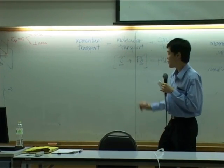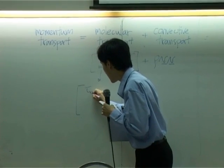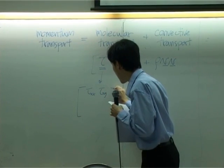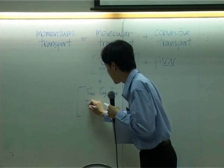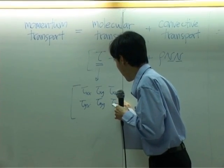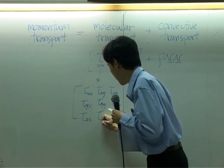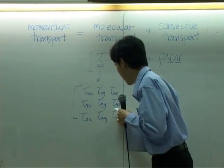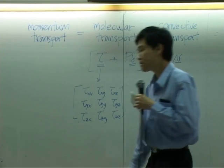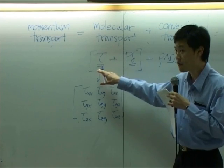If you write down in terms of matrix, tau here, you have tau x, x, y, x, e. Okay, this is matrix of tensor representing tau.